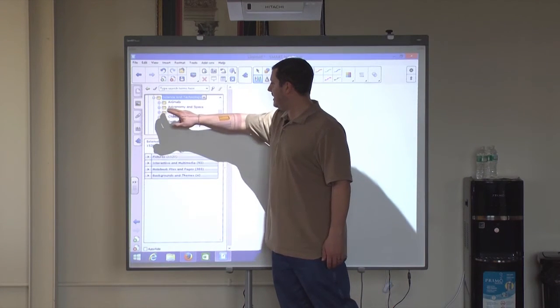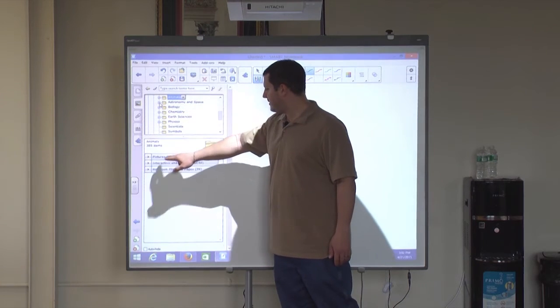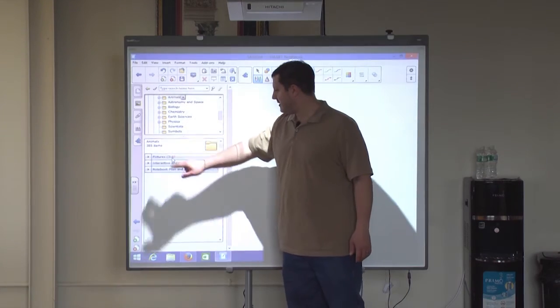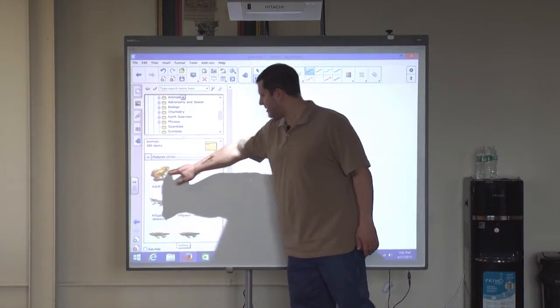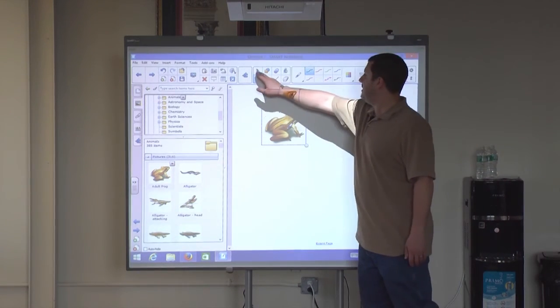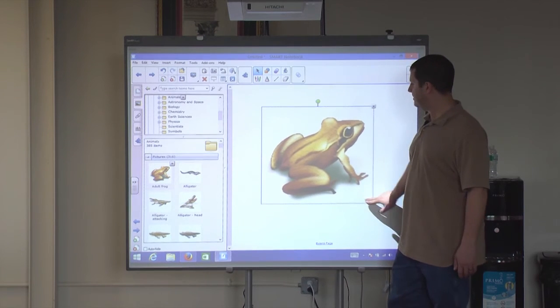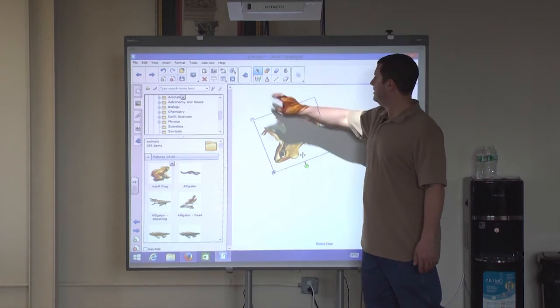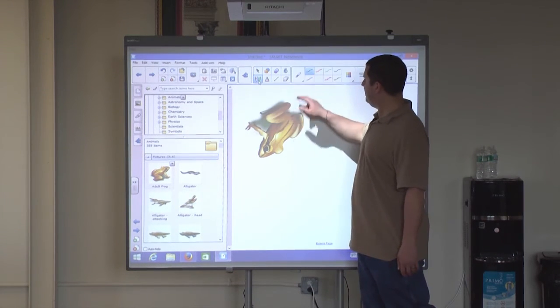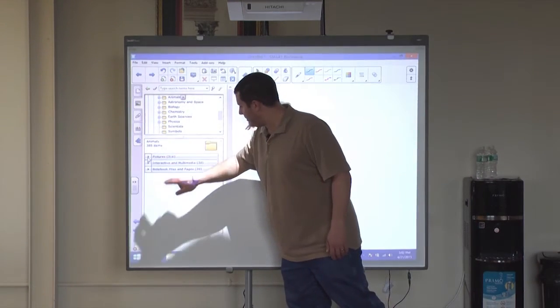And it could be just something as simple as, you know, we'll open up animals, for instance. We've got pictures, interactive and multimedia, and notebook files and pages. So it could be something as simple as a picture of a frog, which we can just drag into our workspace here. Once it's in there, it's an object. So you can do whatever you want with it. Make it bigger, make it smaller, spin it around. You can even draw on it. If I select the pen, you can draw on it.